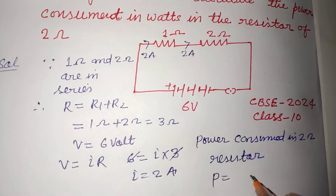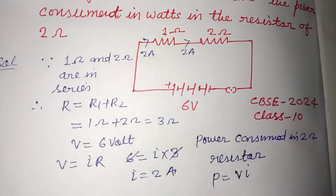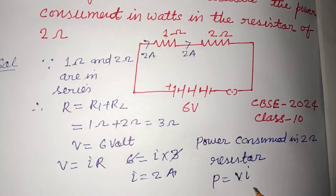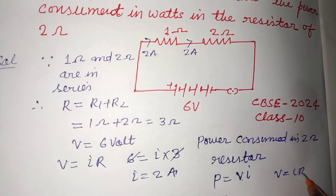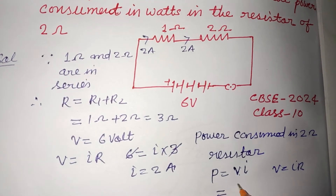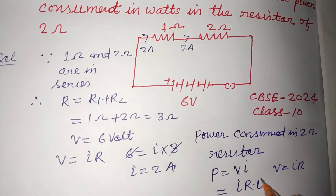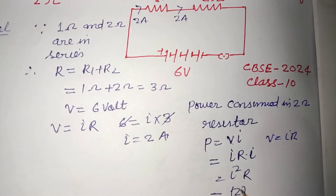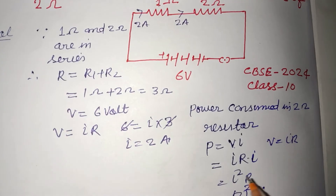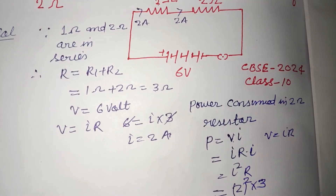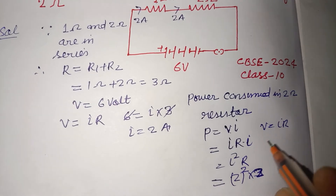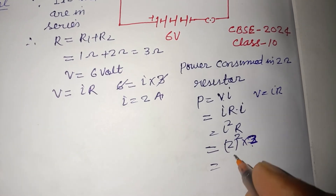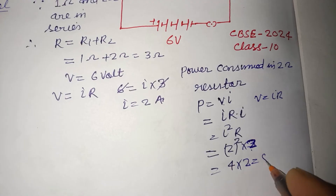Power P equals VI, and since V equals IR, substituting gives P equals I squared times R. Here I is 2 ampere and R is 2 ohms, since we are only checking power consumed in the 2 ohm resistor. So P equals 2 squared times 2, which is 4 times 2, giving 8 watts.